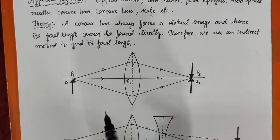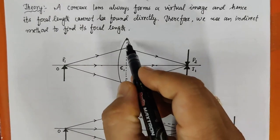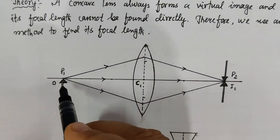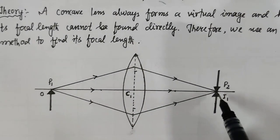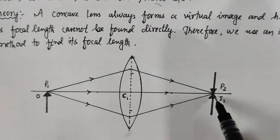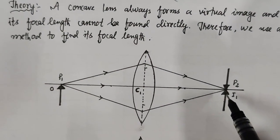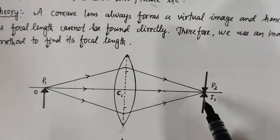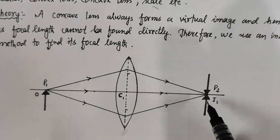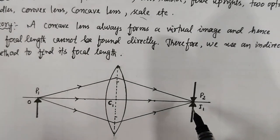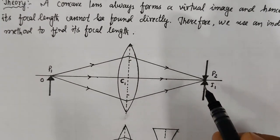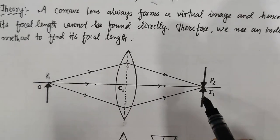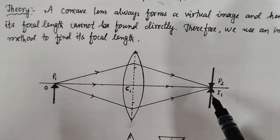First, what do we do? We use a convex lens. We place an object in any position, focus on it, and find an inverted image. When the object is placed at twice f, the image will be formed at twice f on the other side with the same size, real and inverted.